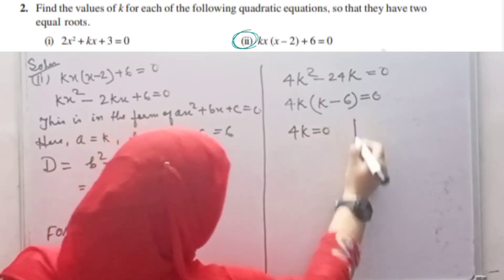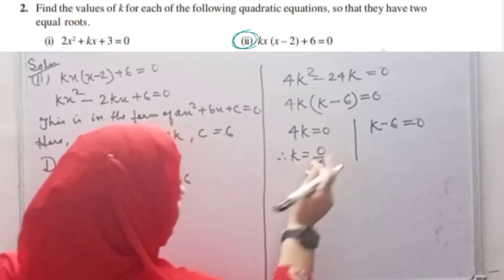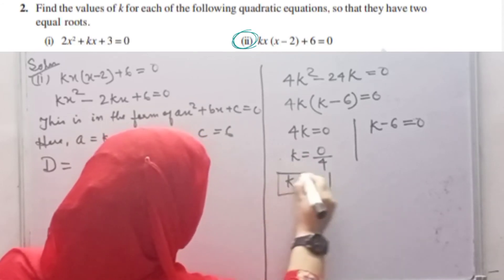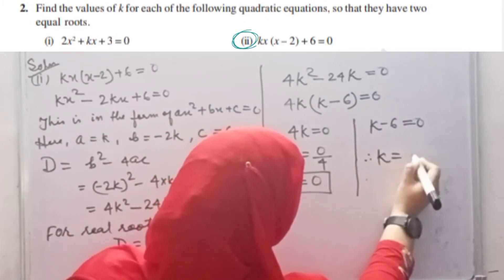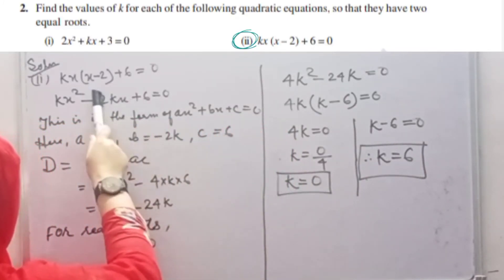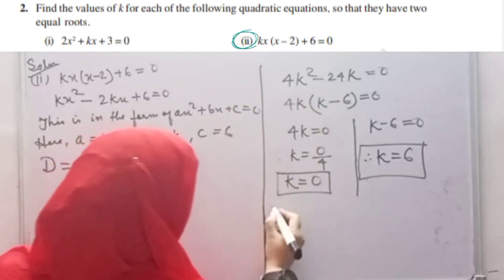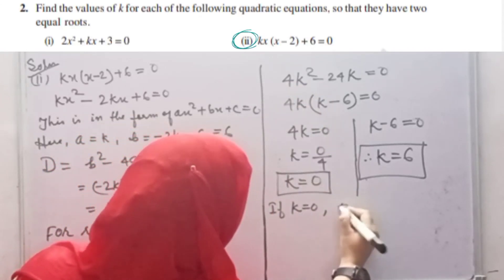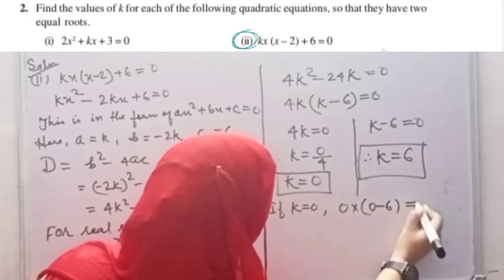Therefore k equals to 0 divided by 4. What will come? k equals to 0. Here, k minus 6 equals to 0, so k equals to 6. But look here, if k equals to 0, if we put 0 in the equation, 0 into (x-2) plus 6 equals to 0. But 6 is not equal to 0.